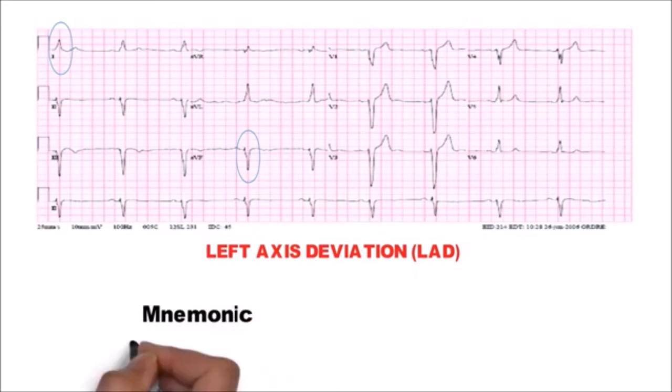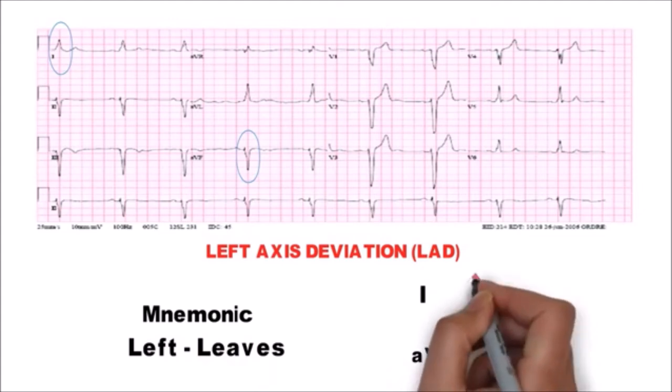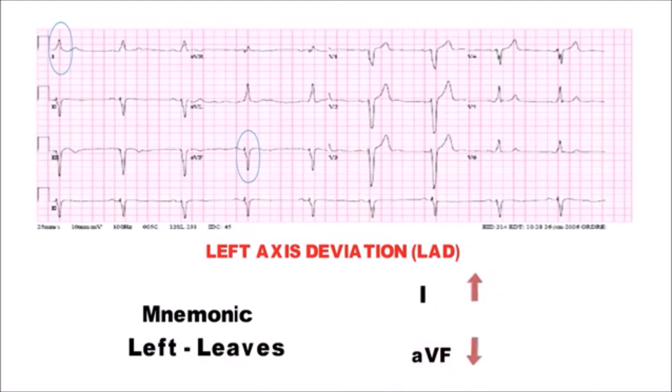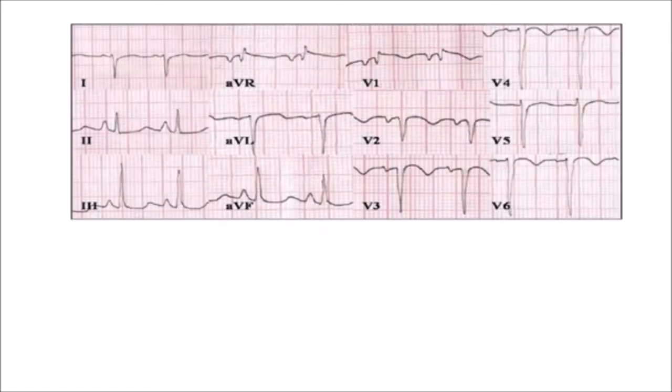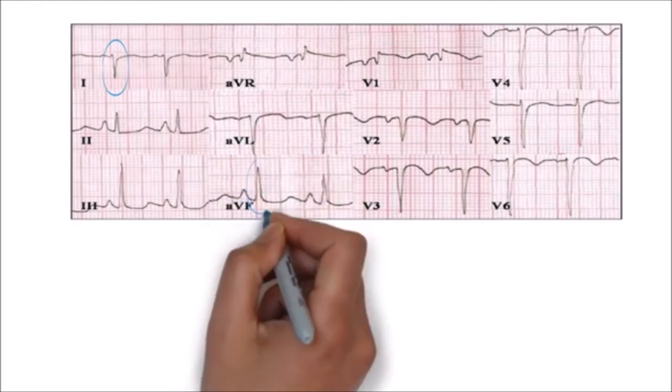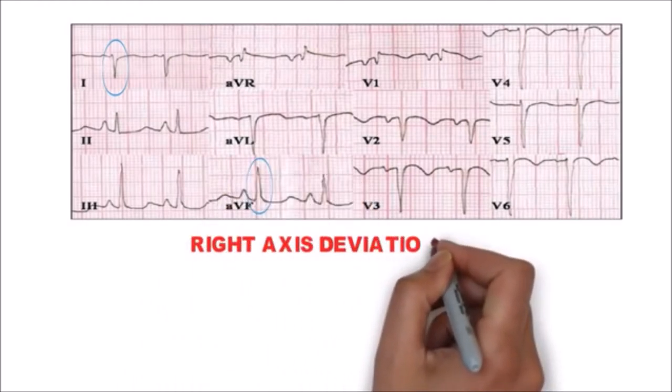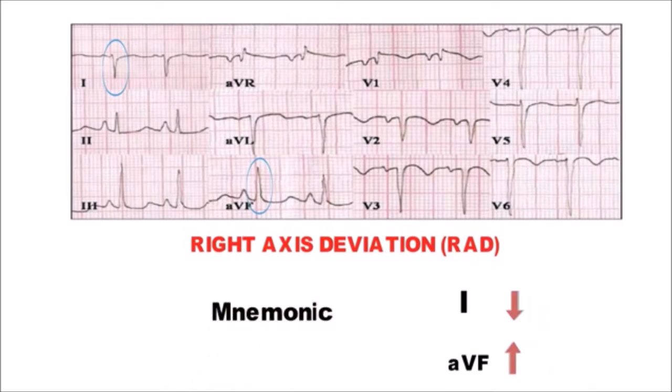And you can remember this by a mnemonic 'left leaves' where net deflection in lead 1 and avf are in opposite direction or as if they are leaving, whereas in this ECG net QRS is negative in lead 1 and positive in avf. So this is a right axis deviation and you can remember this by a mnemonic 'right returns'.